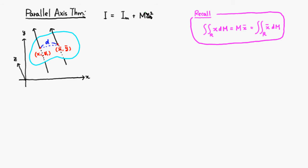Basically what it says is that the moment of inertia about the center of mass is the smallest possible moment of inertia among all axes parallel to the z-axis, but if you move the axis d distance away from that, you're going to end up increasing the moment of inertia by total mass times that distance squared.